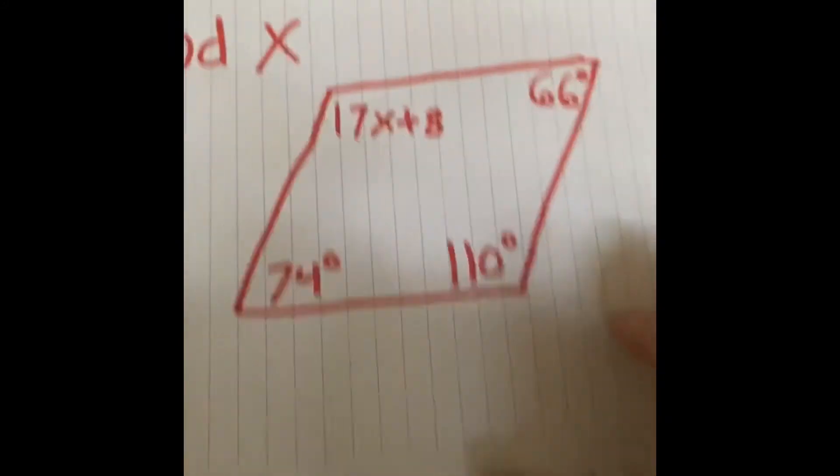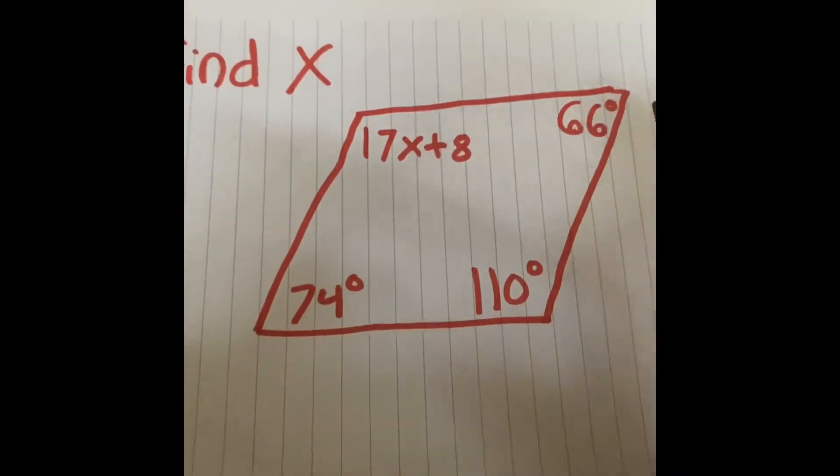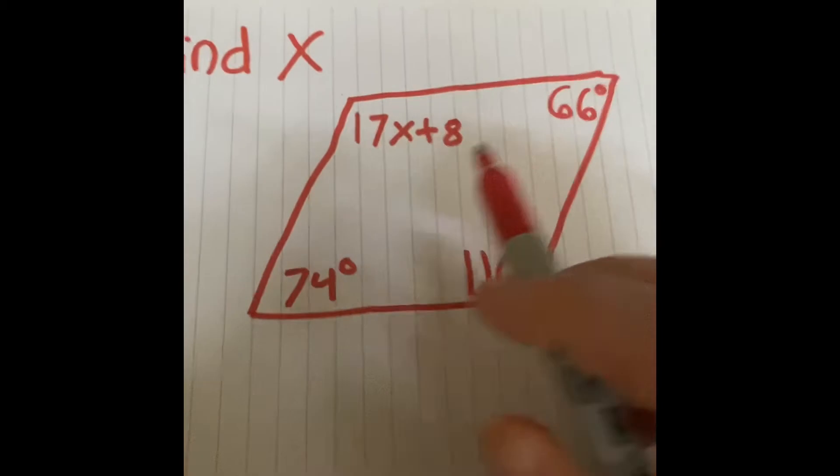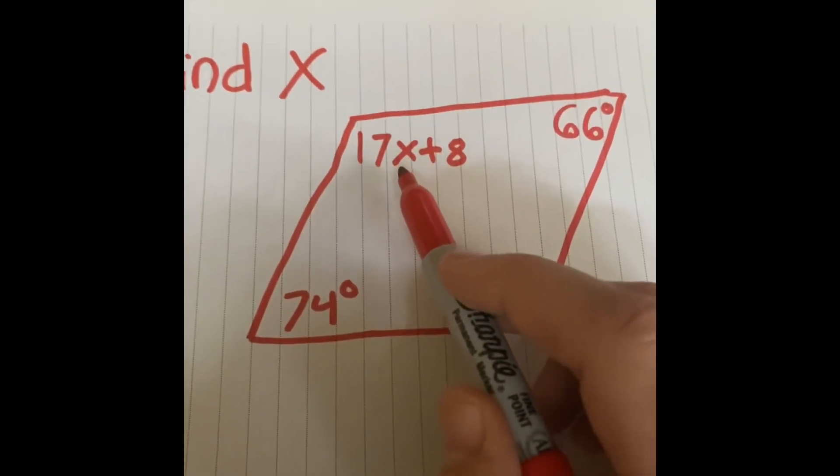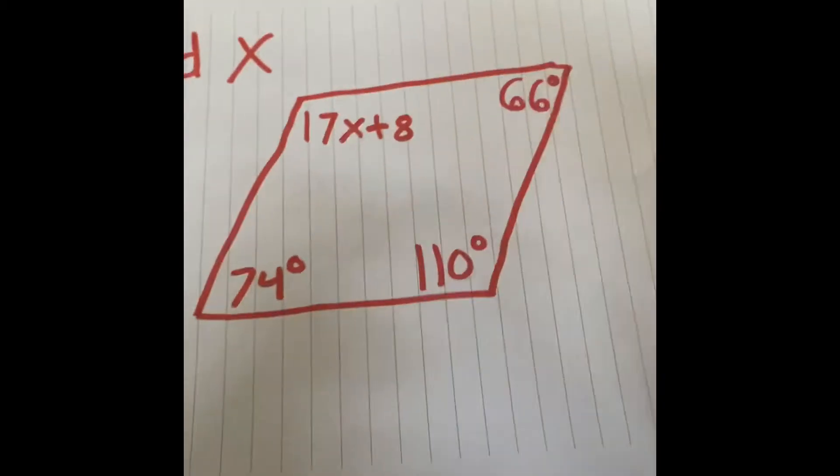The other kind of problem I want to show you is very similar. Again, I'm given three measurements here that I'm going to add up first. This time, instead of just an x, I'm given 17x plus 8 for the fourth one. So I'm going to start the same though. I'm going to add my three.